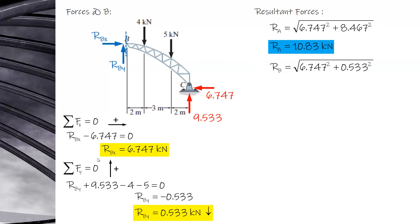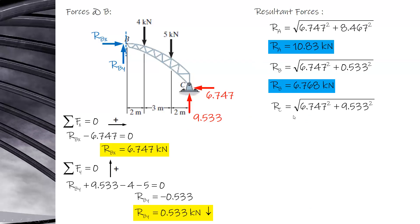For B, you compute the resultant from its components. For C, same approach. If the problem on the 3-hinged arc is only asking for the reactions, that part of the problem is straightforward.